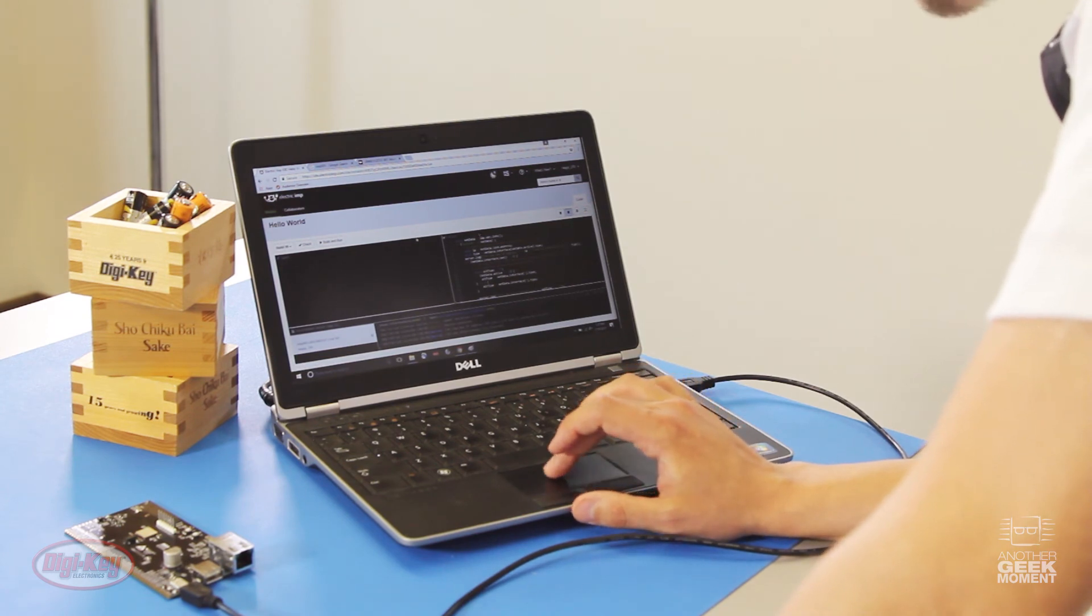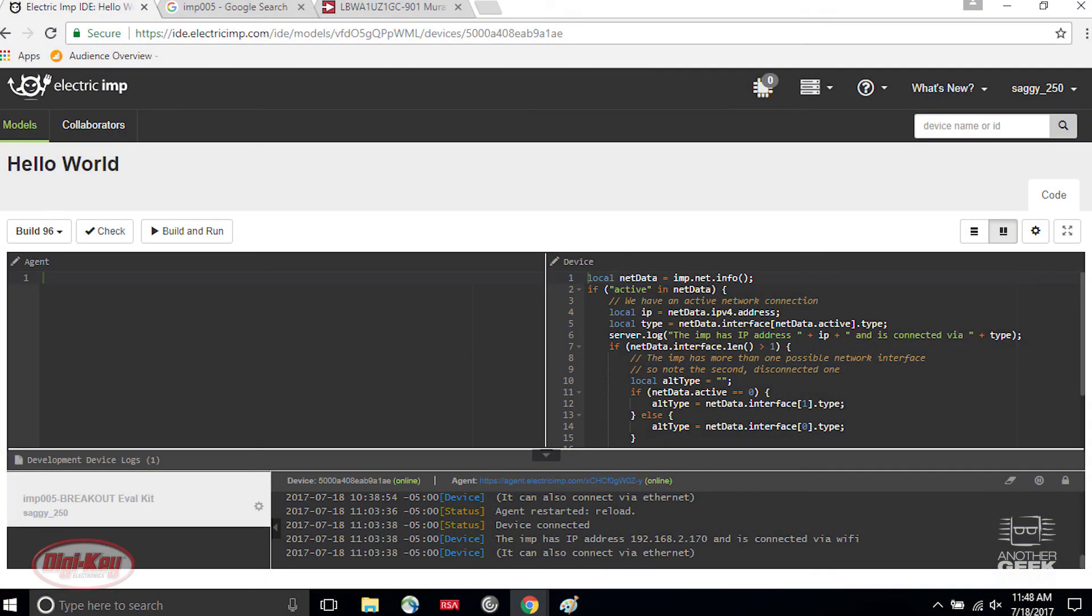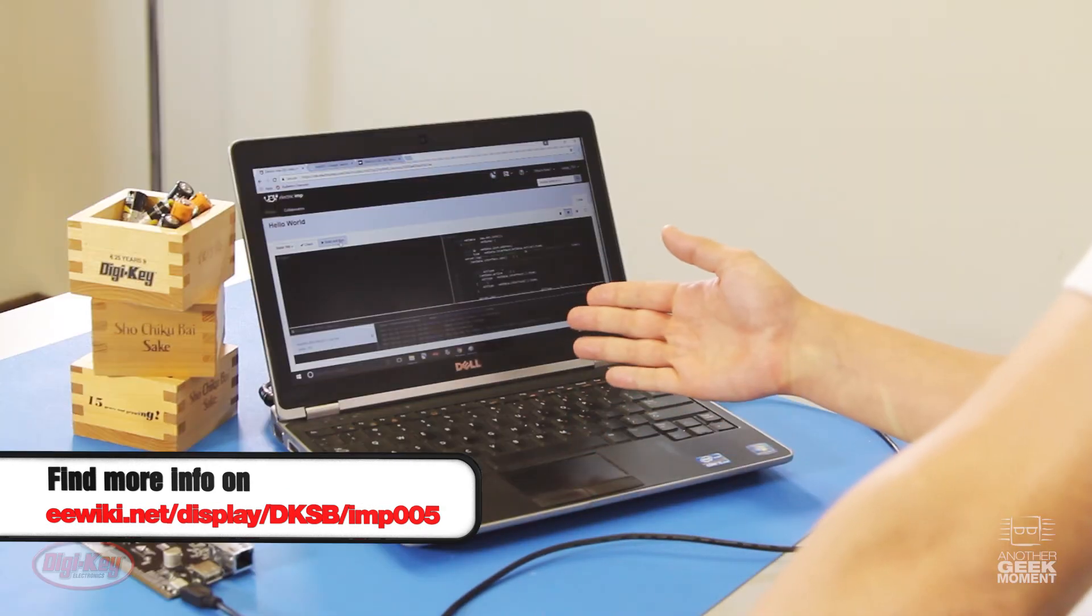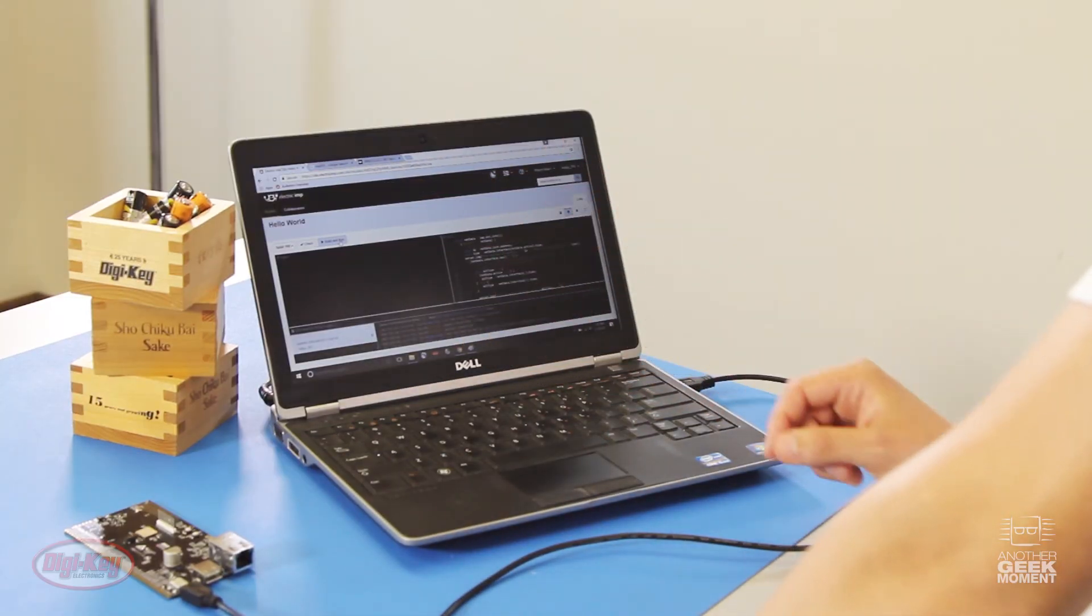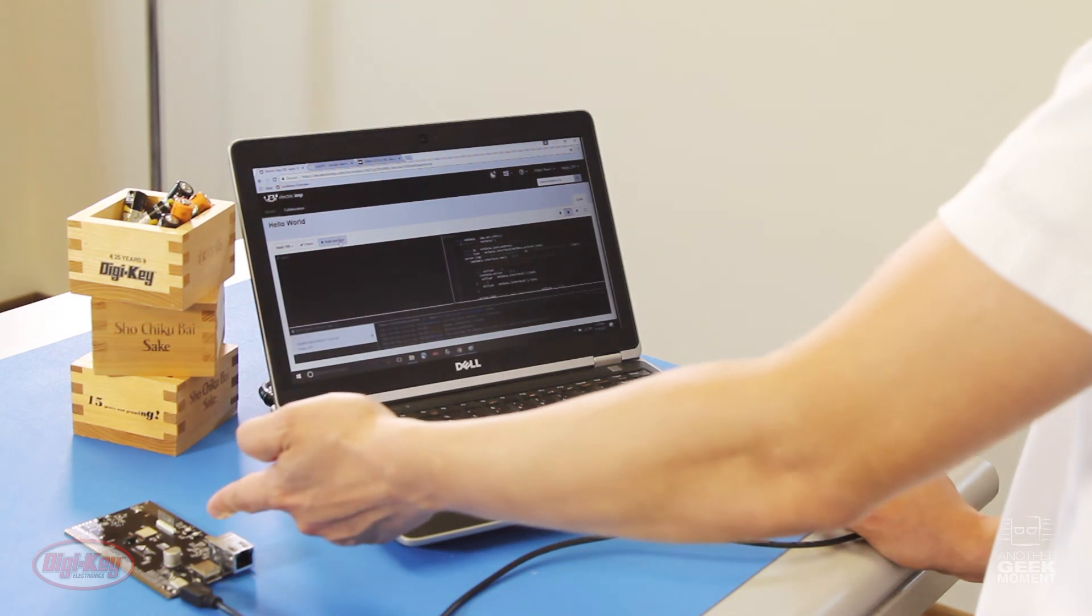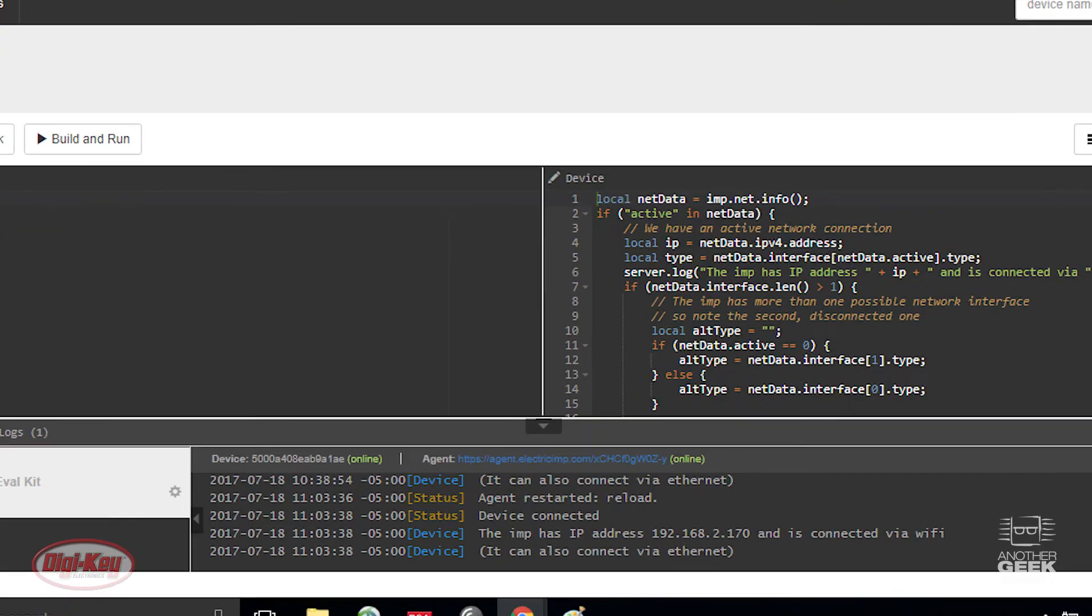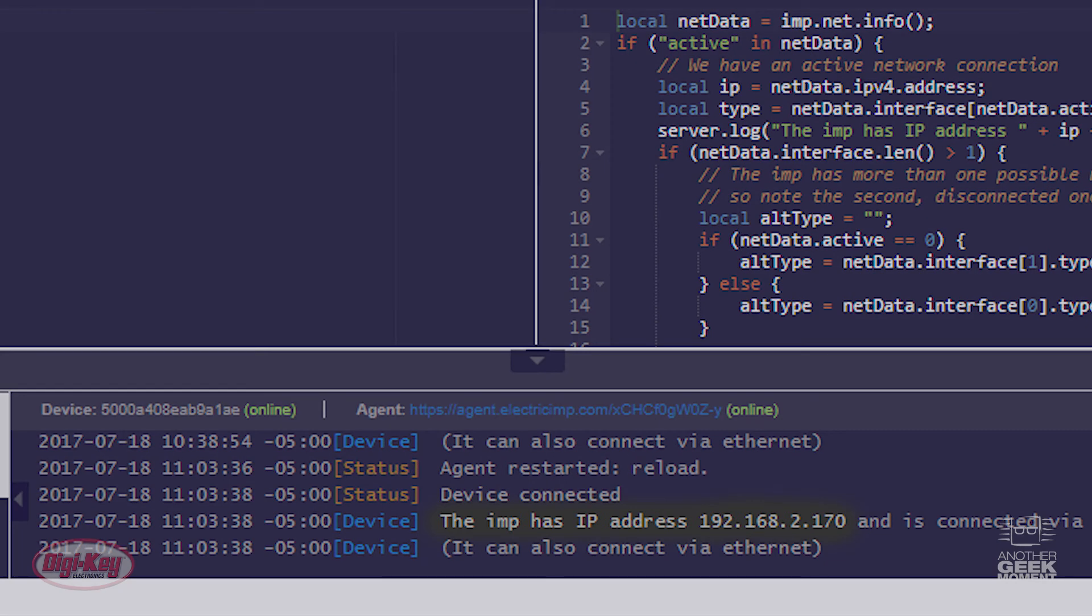And if I go to my build and run, the code will be linked on our EE wiki page. I can see I've now sent this to be compiled. The chip has looked at what the IP address is, sent it back, said the IMP has IP address 192.168.2.170 and is connected via Wi-Fi.